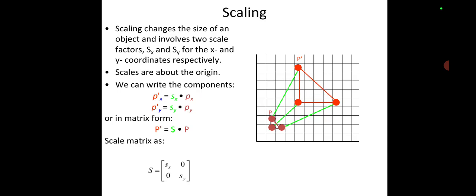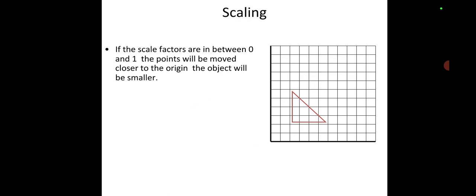We are transforming or scaling a particular element with new P'x coordinates. If the scale factors are in between 0 and 1, the points will move closer to the origin and the object will appear smaller. Here we have a triangle of 3 pixels. When we represent a scale factor between 0 and 1, it will point the pixels closer to the origin, so the triangle will appear close to the origin.